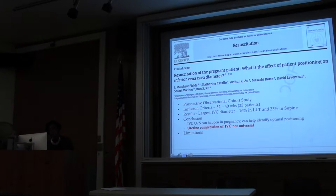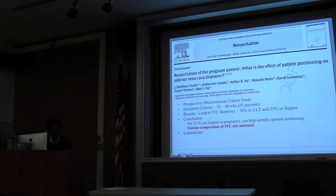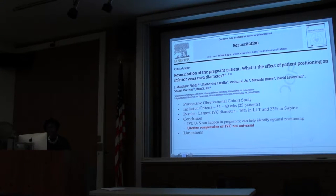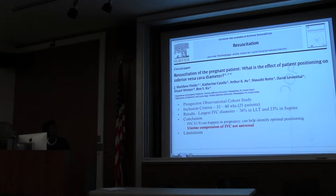The IVC was measured by three ultrasound-trained faculty. What they wanted to show was whether the IVC diameter was greater in the left lateral decubitus position compared to supine or right lateral decubitus. They found that the largest IVC diameter was in the left lateral decubitus position, but in some patients, the supine position yielded the largest IVC diameter. Their conclusion was that ultrasound can be used to identify IVC diameter in pregnant patients, and that uterine compression of the IVC is not always universal.